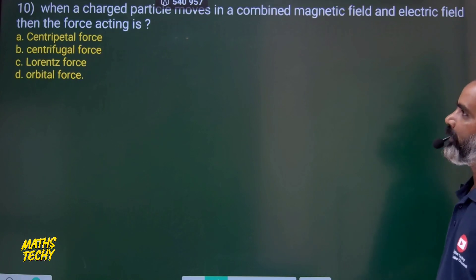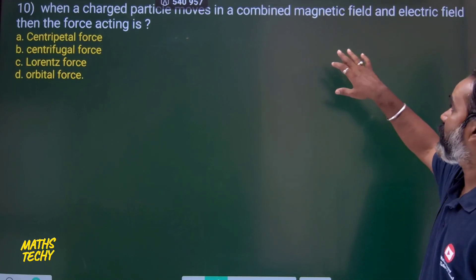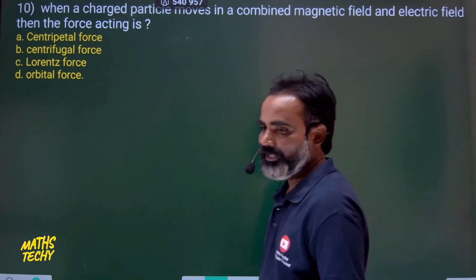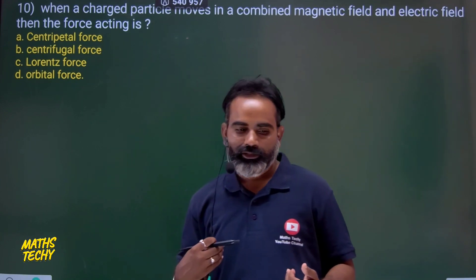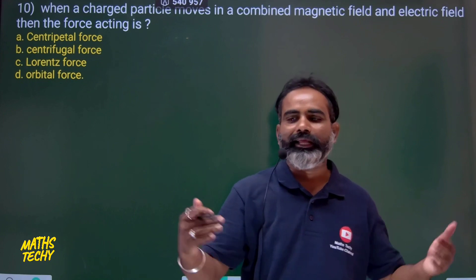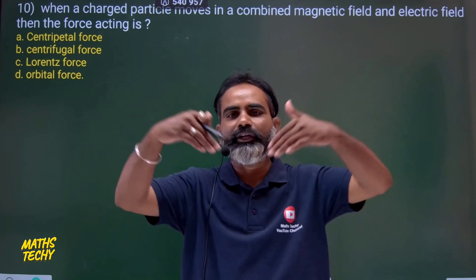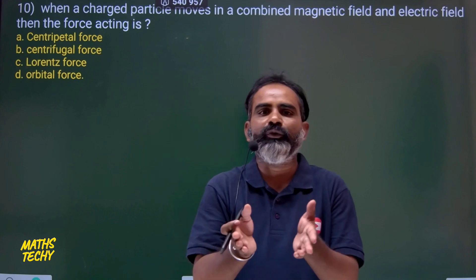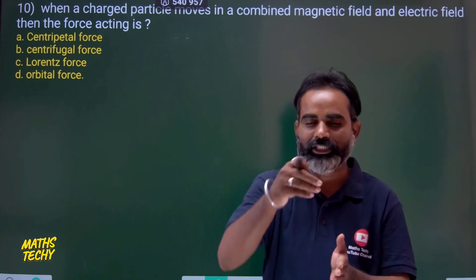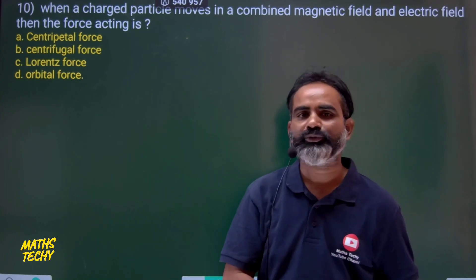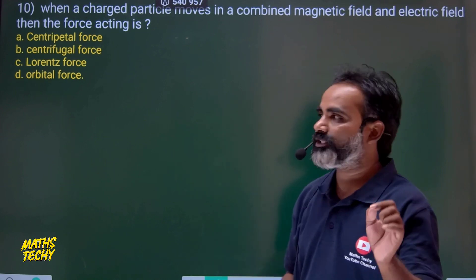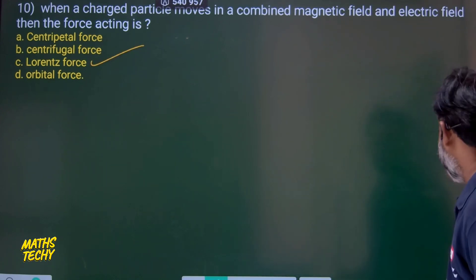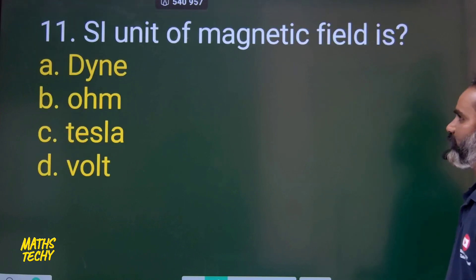Question 10: When a charged particle moves in a combined magnetic and electric field, the force acting on it — with both electric and magnetic fields present, both forces act on the charged particle. The net force on the charged particle in this combined field is called the Lorentz force. Option C is the correct answer.